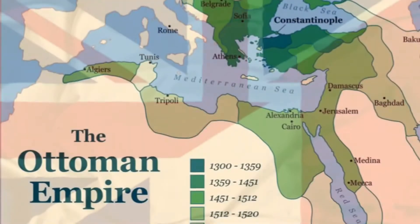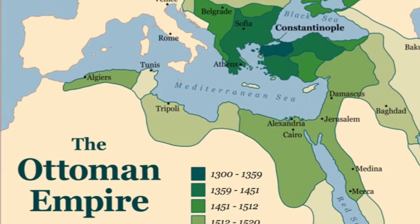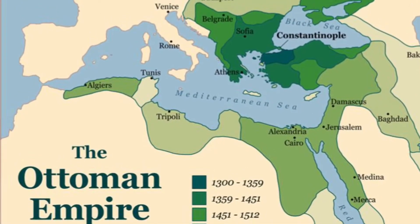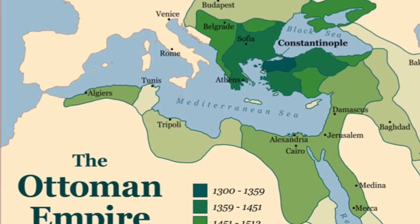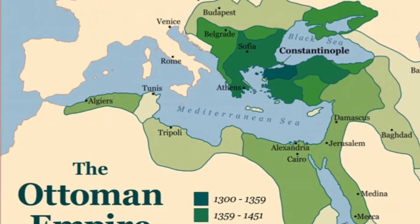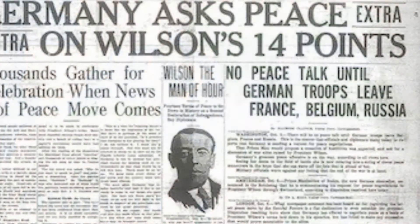Wilson's 14 Points was a peace negotiation between both sides to try to avoid a Second World War.